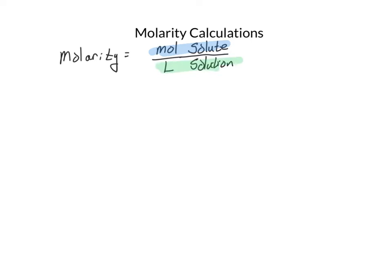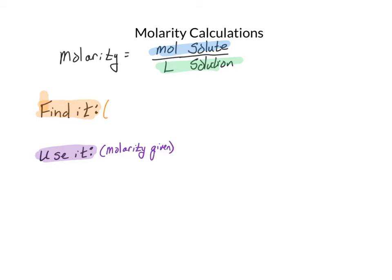There are two types of problems: find the molarity and use the molarity — very similar to what we did with percents. If a molarity value is given, then that must be a use-the-molarity problem. If it asks 'what is the molarity,' obviously that's a find-the-molarity problem. We'll see both types on the next few pages.